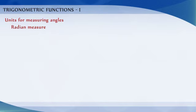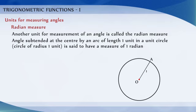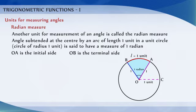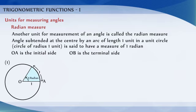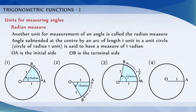Radian measure: there is another unit for measurement of an angle called the radian measure. The angle subtended at the center by an arc of length 1 unit in a unit circle is said to have a measure of 1 radian. Let OA be the initial side and OB the terminal side. The angle measures of 1 radian, minus 1 radian, 1½ radian, and minus 1½ radians are shown here.